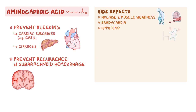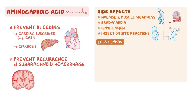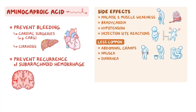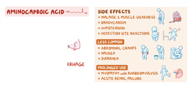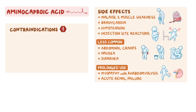Side effects of aminocaproic acid include malaise and muscle weakness, bradycardia, and hypotension, as well as injection site reactions. Less commonly, it can cause gastrointestinal side effects like abdominal cramps, nausea, and diarrhea. Prolonged use may lead to myopathy with rhabdomyolysis, which may ultimately result in acute renal failure.